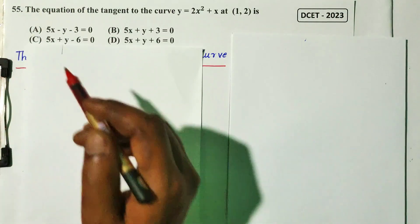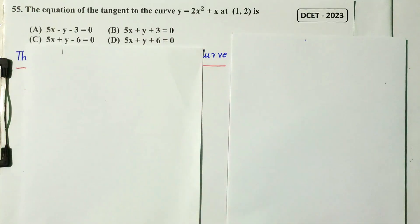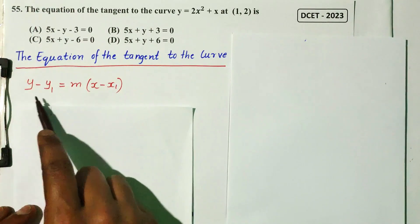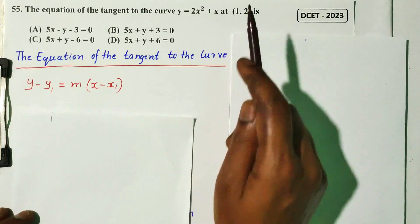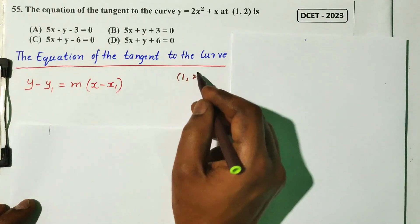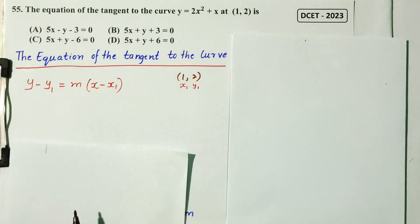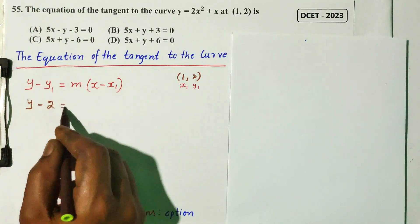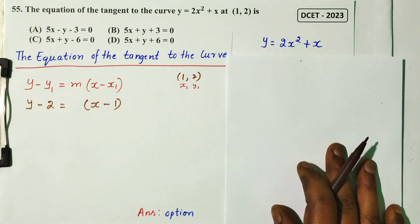Question number 55. Find the equation of the tangent to the curve y = 2x² + x at point (1, 2) — DCT 2023 question. Using the tangent formula: y minus y' = m times (x minus x'), where the point is x'=1, y'=2.